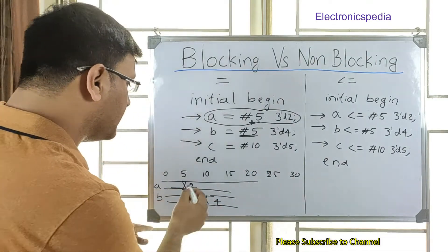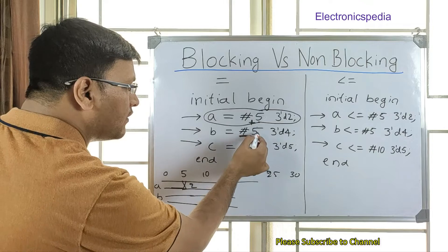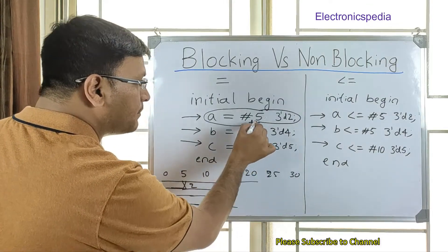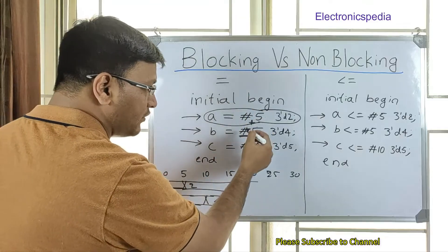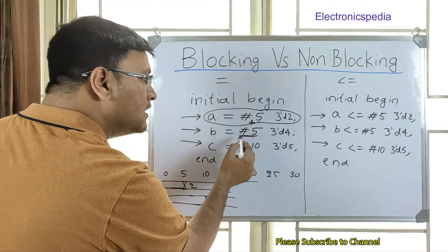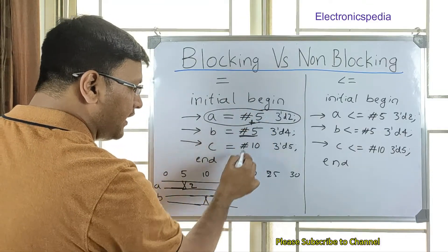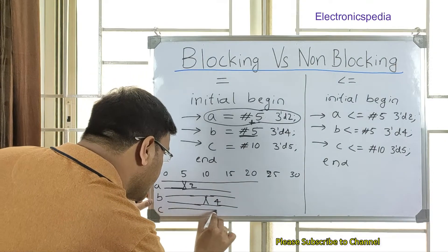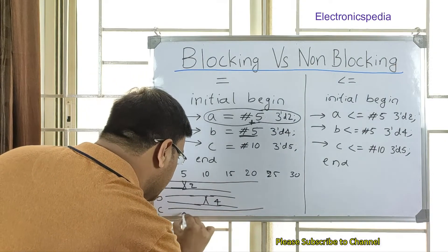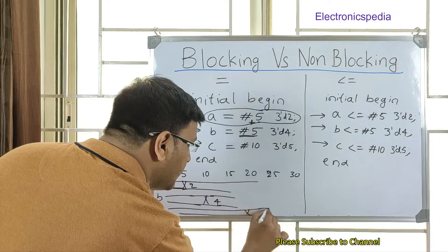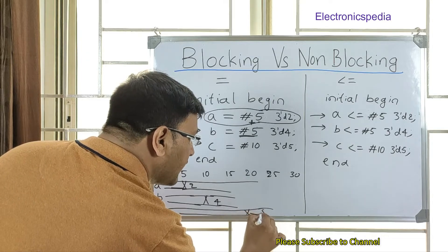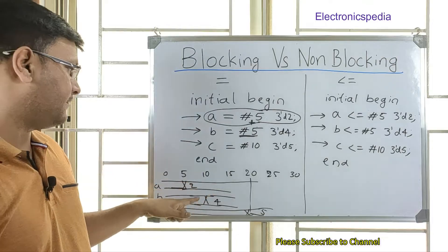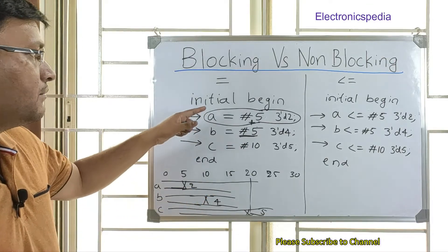Similarly, C gets its value after the previous delays complete. That is 5 + 5 = 10 nanoseconds, plus C's own 10 nanosecond delay, totaling 20 nanoseconds. So at 20 nanoseconds, C gets a value of 5. That covers the blocking statement behavior.